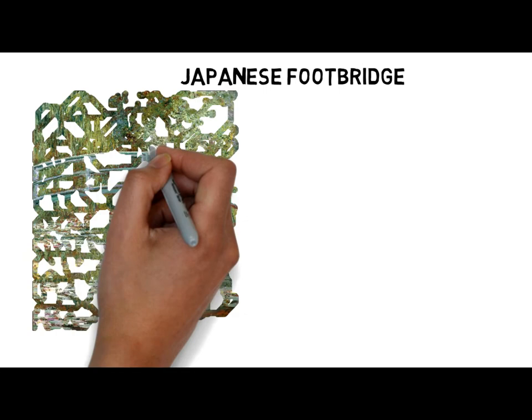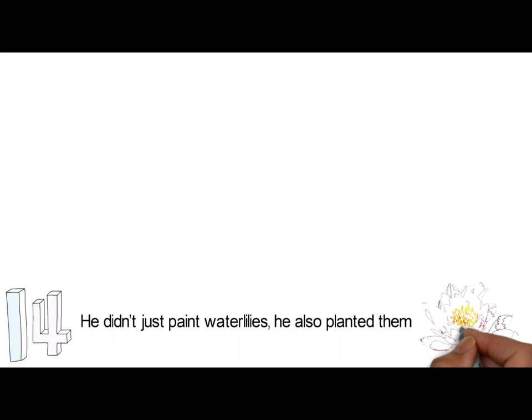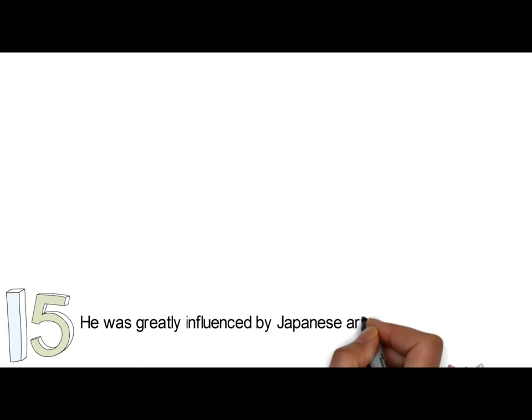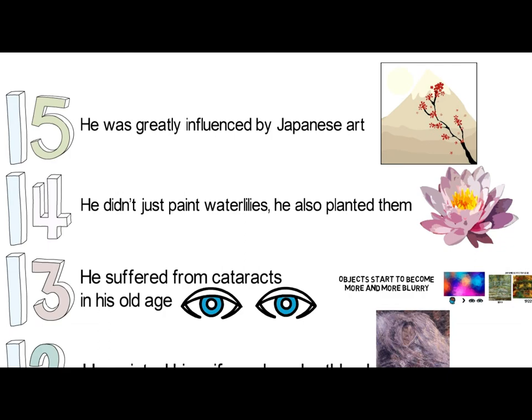Number 14: He didn't just paint water lilies — he also planted them. Number 15: He was greatly influenced by Japanese art. Monet looked to Japan not only for his gardening inspiration but for his artistic inspiration too. So there you have it — 15 interesting facts about one of the greatest artists the world has ever known.